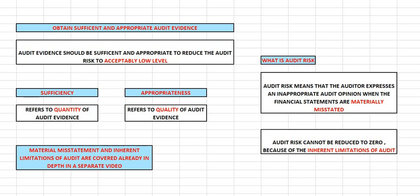Hello guys, welcome to my YouTube channel. Today's discussion is going to be on another requirement of SA 200. We've already discussed in previous lectures about professional skepticism, and also we have discussed about independence and the code of ethics. Today we're going to discuss about the third requirement of SA 200: obtaining sufficient and appropriate audit evidence.